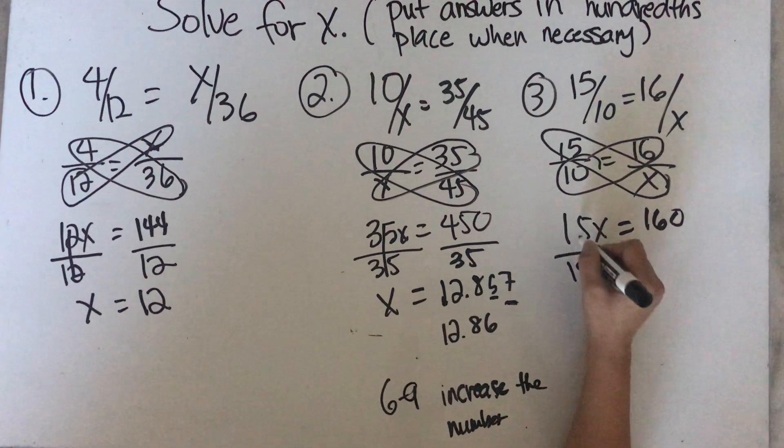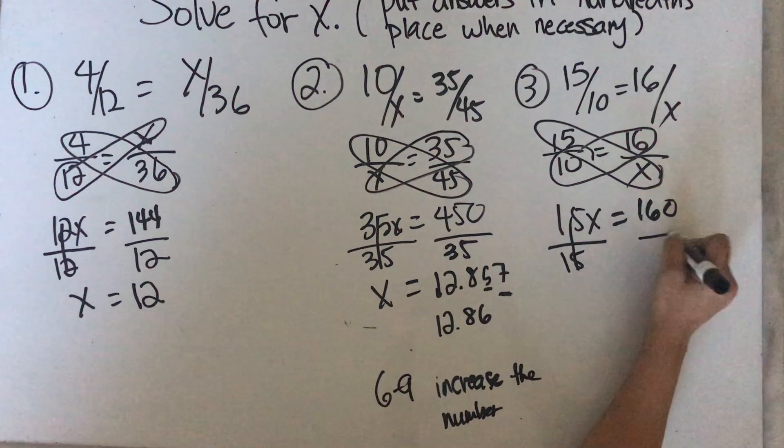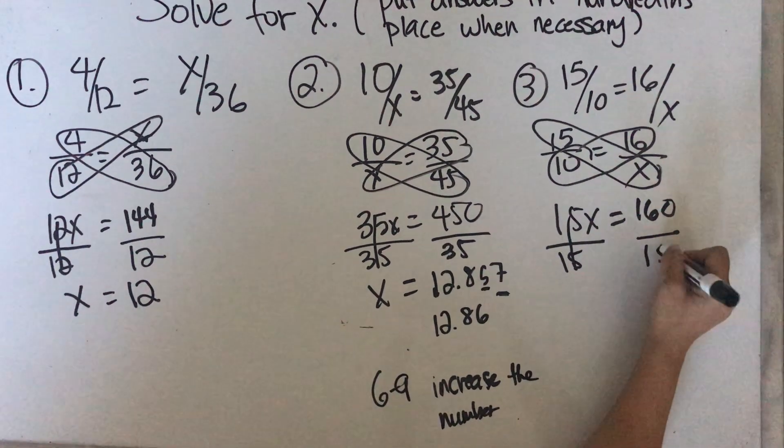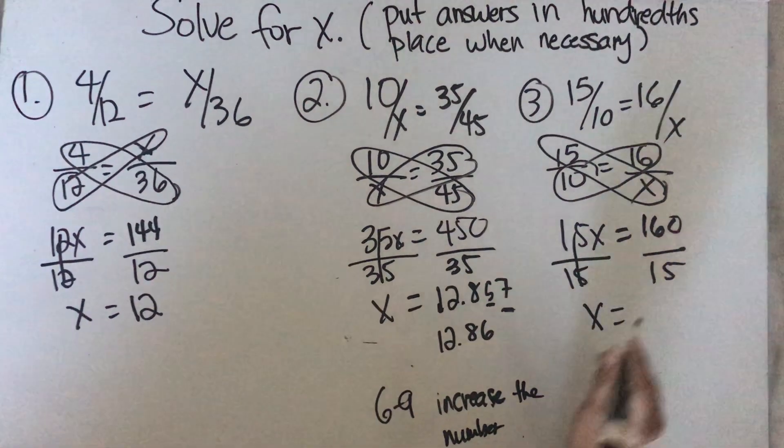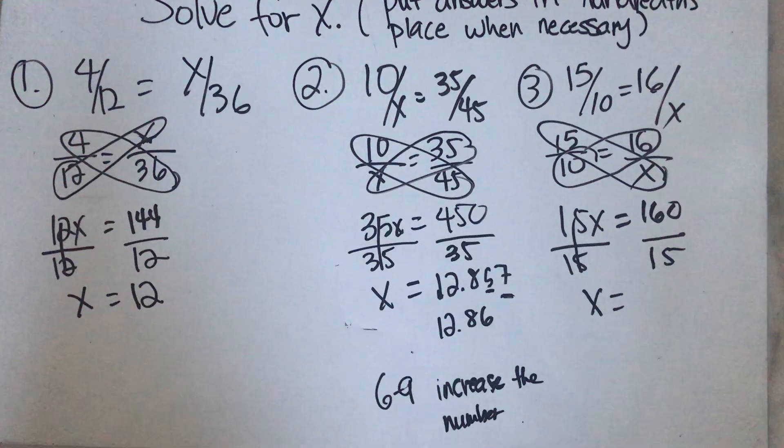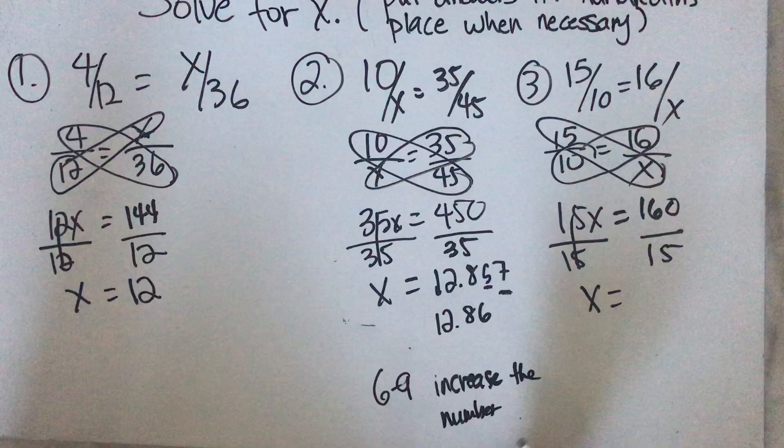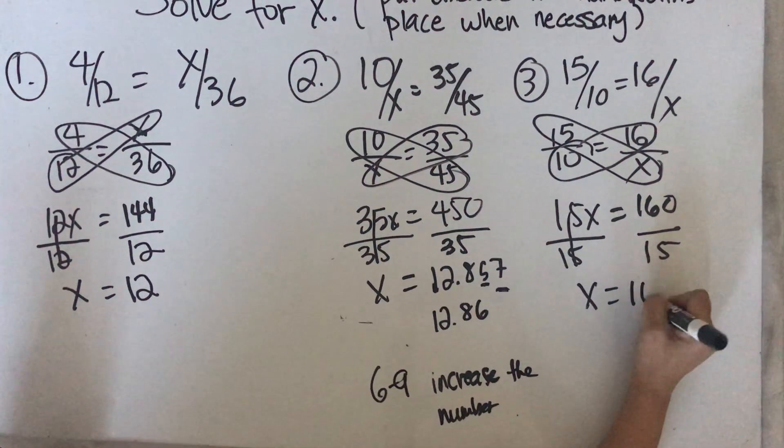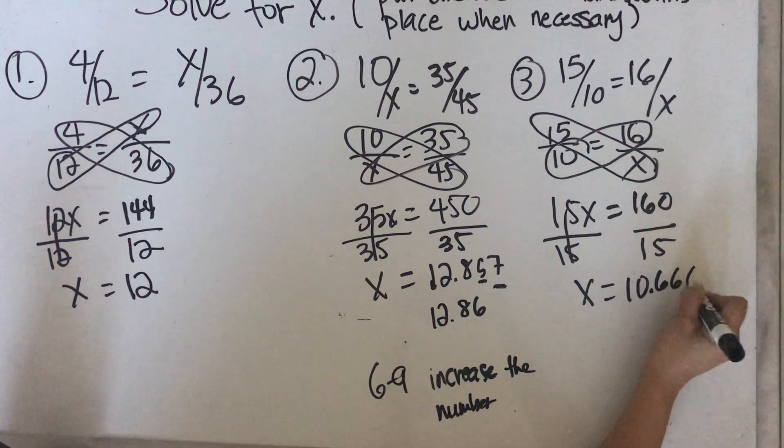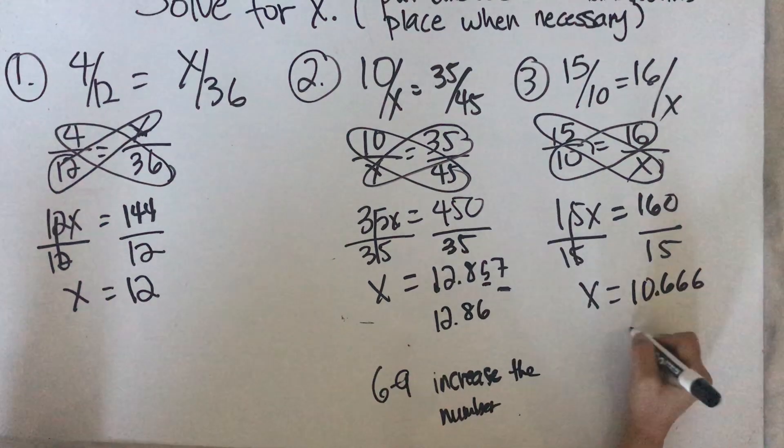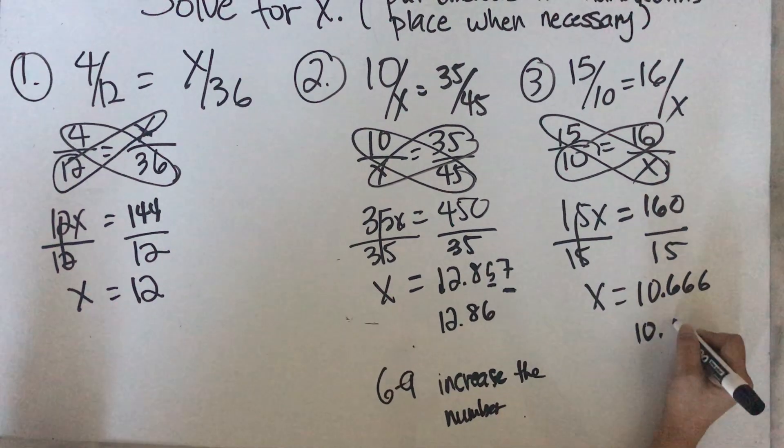10 times 16 is 160. We have to get x by itself. We're going to divide it by 15. If I do it here, I have to do it here. So x is equals to 160. How many times does 15 go into 160? It's 10.666. So the answer here would be 10.67.